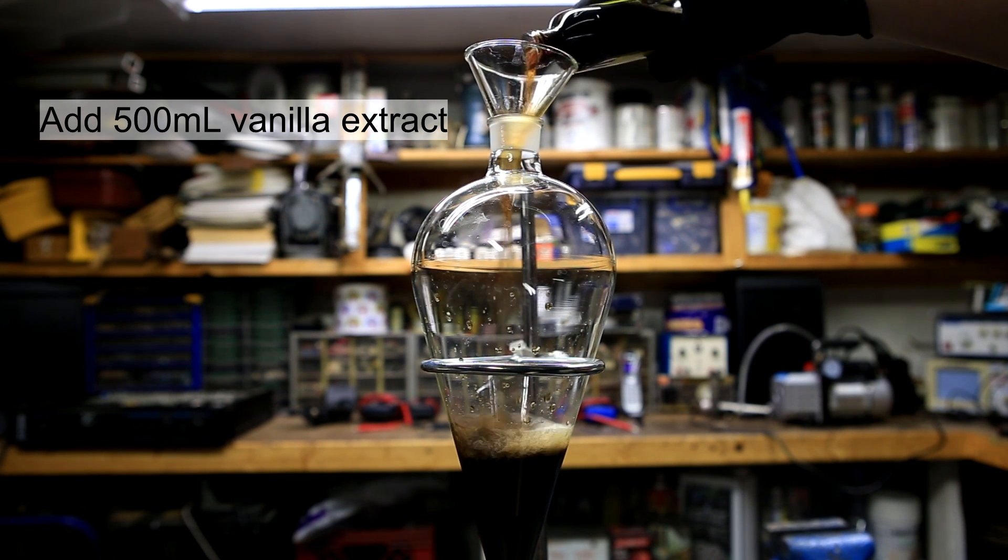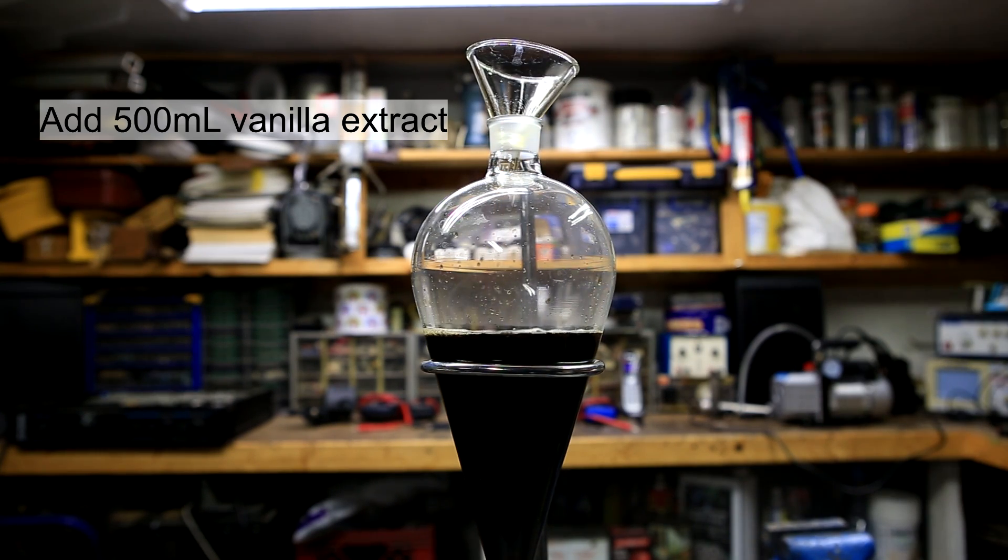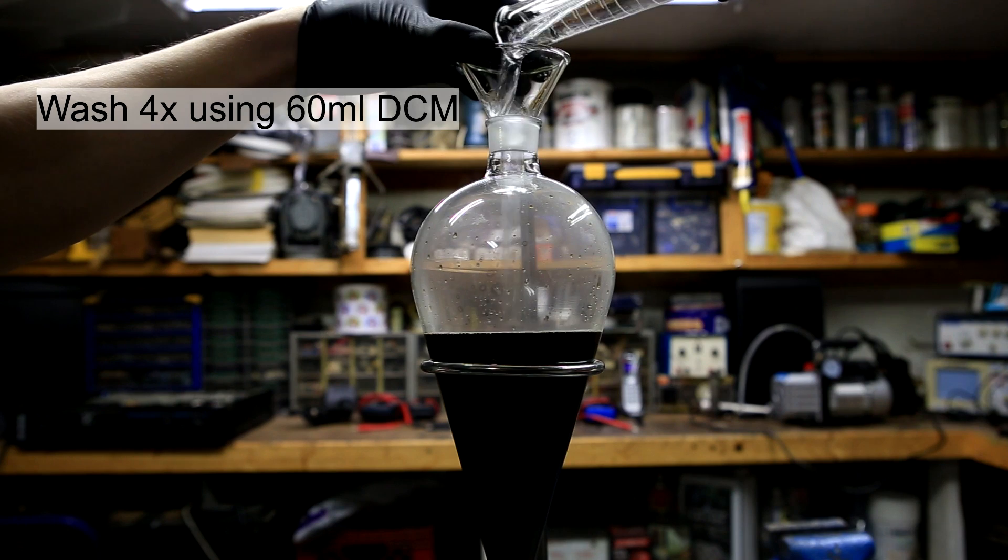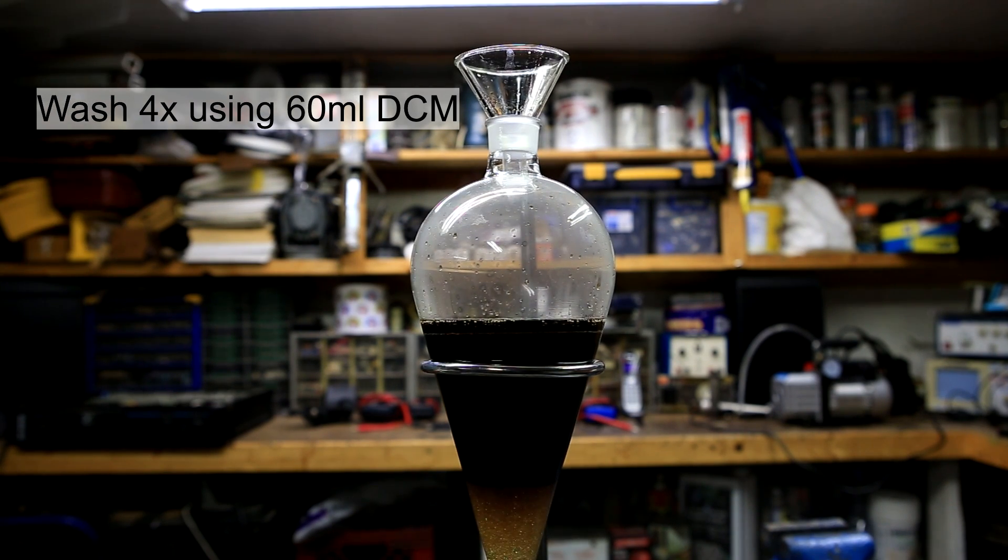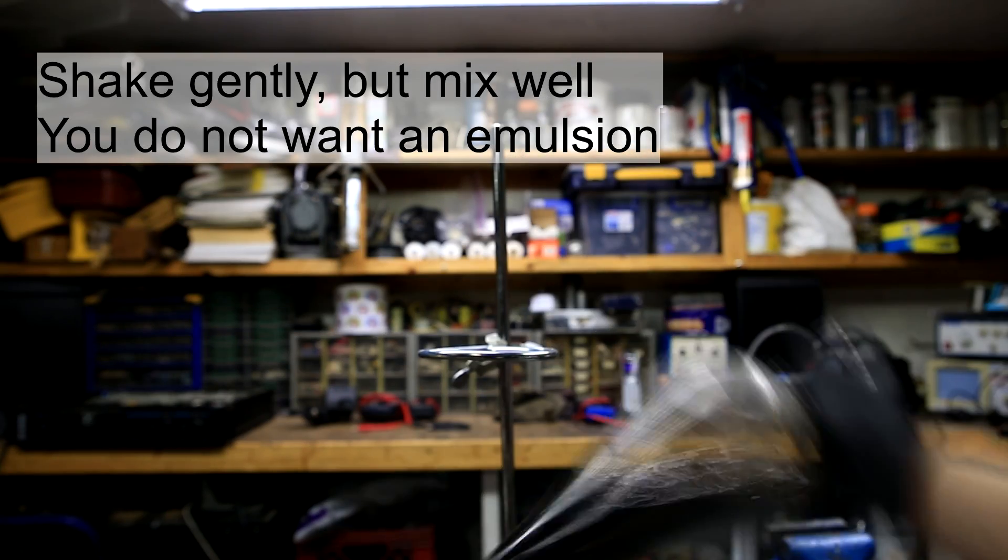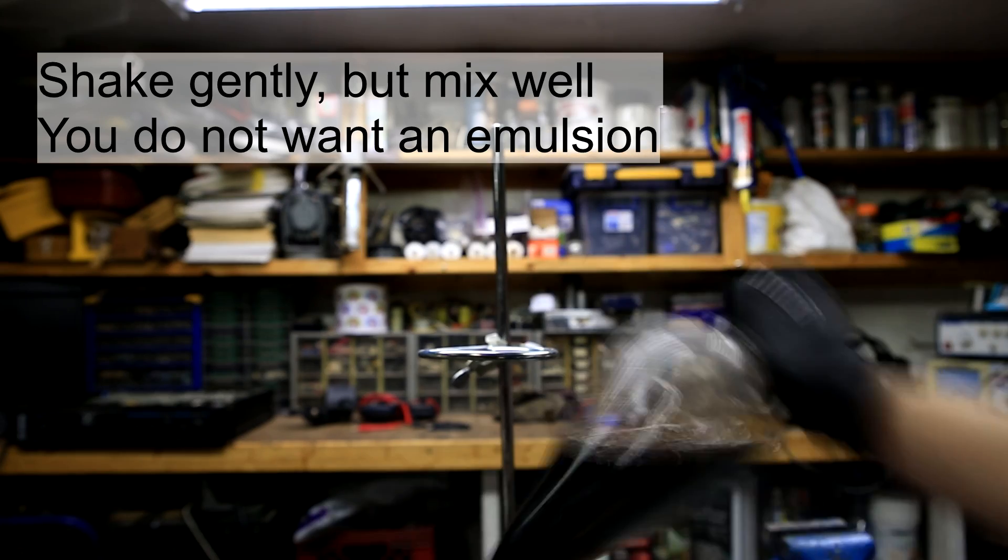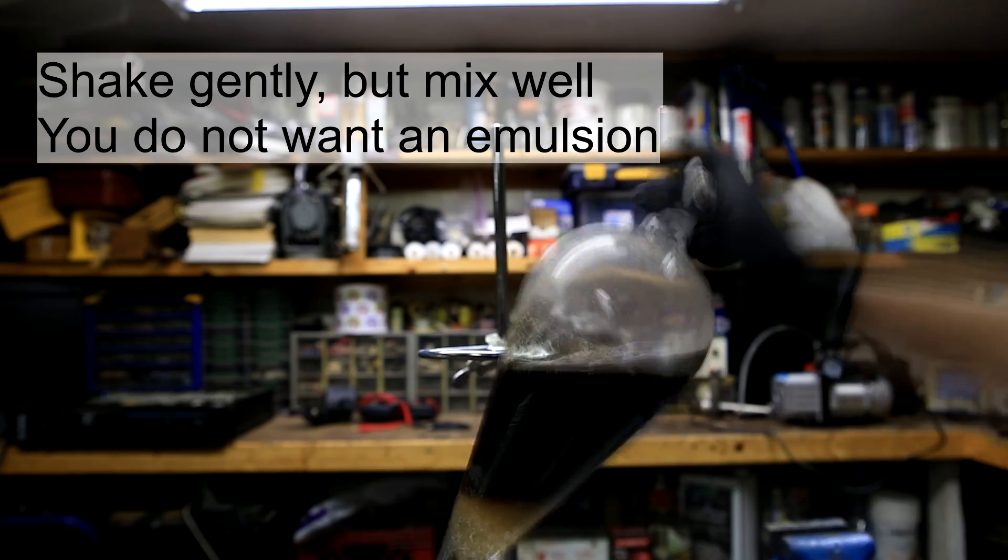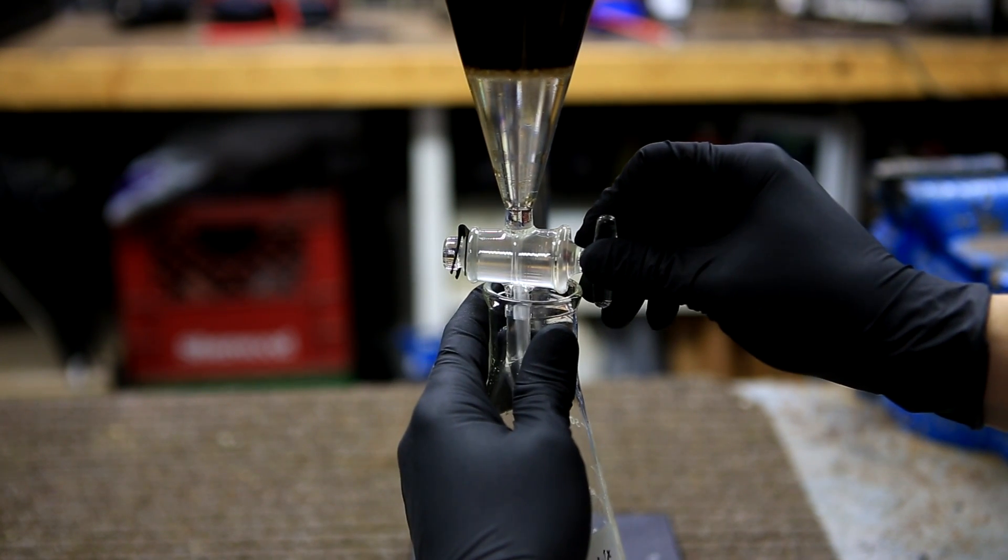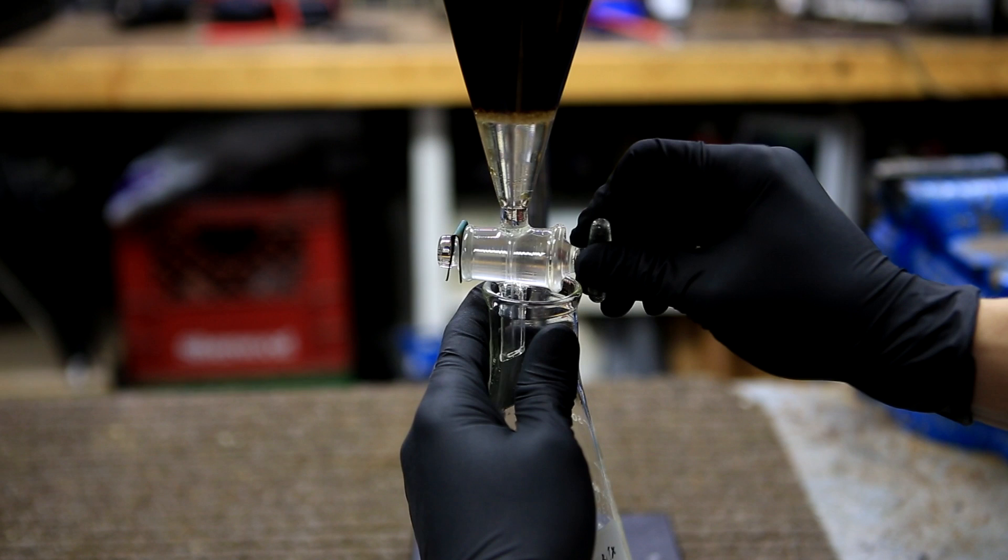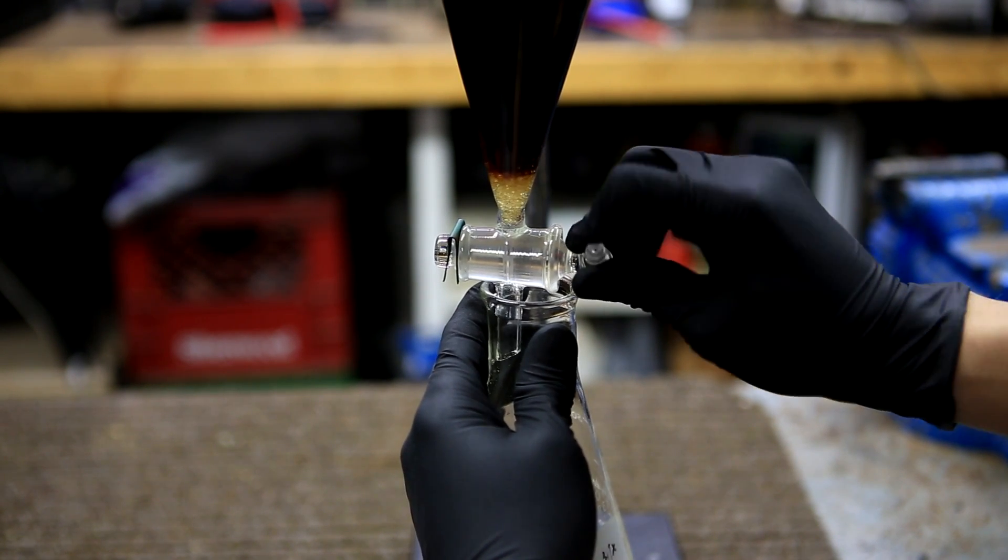To a separatory funnel is added 500 milliliters of artificial vanilla extract. The vanillin is extracted using four washes of 60 milliliters of methylene chloride. After each addition, the separatory funnel is capped and shaken gently in order to prevent the formation of an emulsion. The layers are allowed to separate and the lower dichloromethane layer is drained into an Erlenmeyer flask. As stated before, this process was conducted a total of four times.